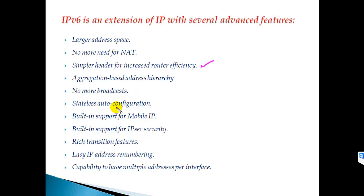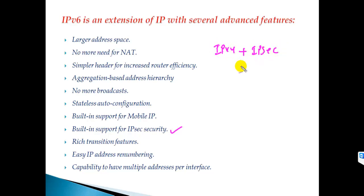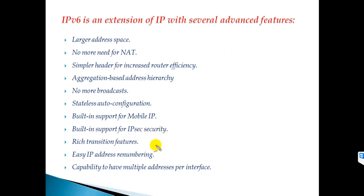IPv6 also supports stateless auto-configuration, where a device can automatically get an IPv6 address by including its own MAC address — we'll cover that in detail in a separate section. It also has built-in support for Mobile IP, allowing you to move around while keeping your IPv6 address. Additionally, IPv6 has inbuilt IPsec security, whereas in IPv4 you need to separately integrate IPsec to provide high-end security.